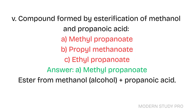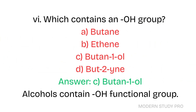Question 5: What compound is formed by esterification of methanol and propanoic acid? A. Methylpropanoate. B. Propylmethanoate. C. Ethylpropanoate. Answer: A. Methylpropanoate. The ester is formed from methanol (alcohol) plus propanoic acid.